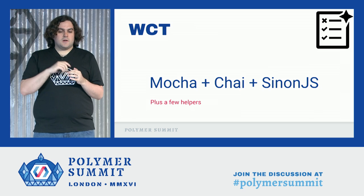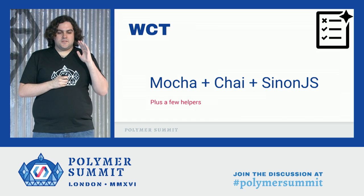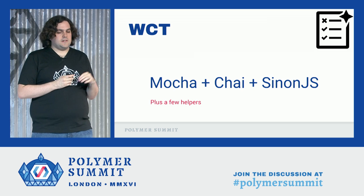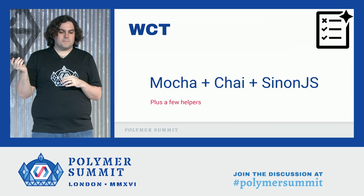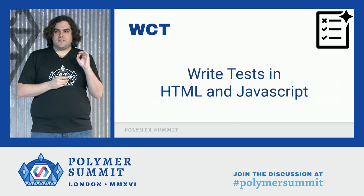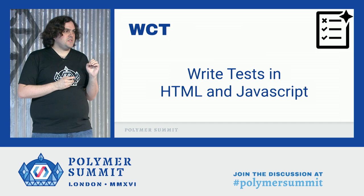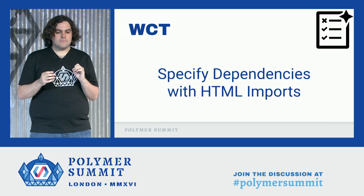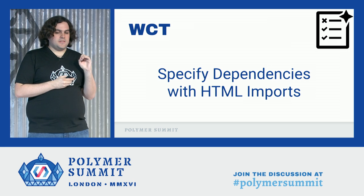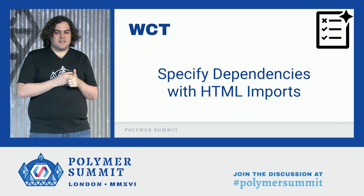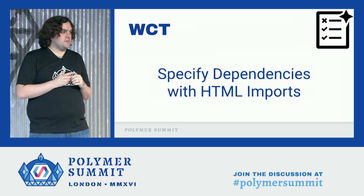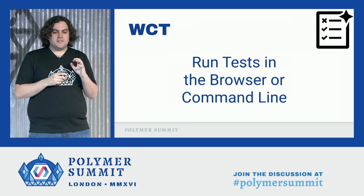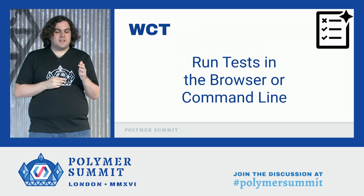We did just that and made Web Component Tester, or WCT for short. We had a few requirements for WCT that no other tool really seemed to give us. Obviously, the first requirement was that Mocha, Chai, and Sinon.js should just be loaded by default, and we also add a few testing helpers. Another requirement is that we wanted to write our tests the same way we write our elements, with HTML and JavaScript together. We also wanted to test our elements using the same dependency mechanism — HTML imports. And finally, we wanted to be able to run our tests both in the browser and via command line.